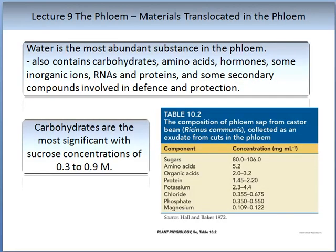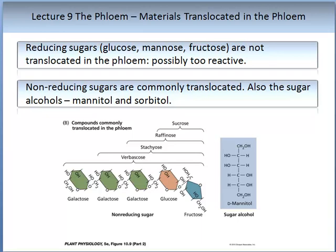Water is the most abundant substance in the phloem. The phloem also contains carbohydrates, amino acids, hormones, some inorganic ions, RNases and proteins, and some secondary compounds involved in defence and protection. Carbohydrates are the most significant, with sucrose concentrations ranging from 0.3 to 0.9 molar. Table 10.1 on the screen gives a composition of phloem sap from bean plants. It is commonly accepted that reducing sugars such as glucose, mannose and fructose are not translocated in the phloem, possibly because they are too reactive in that form. Non-reducing sugars are commonly translocated, as are the sugar alcohols mannitol and sorbitol.